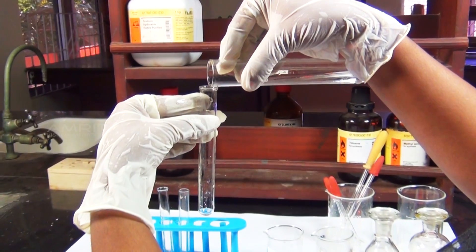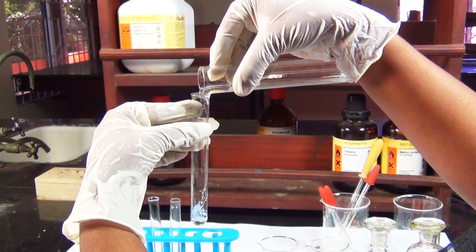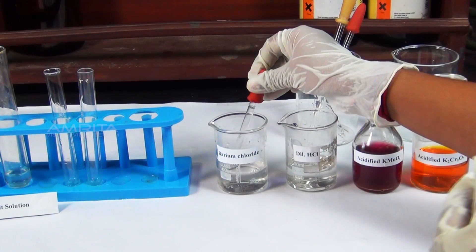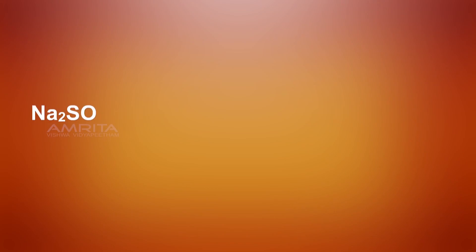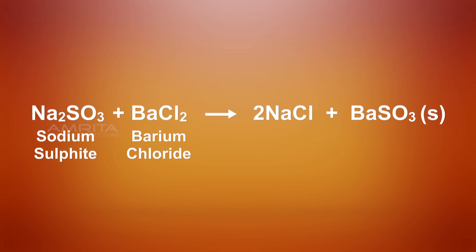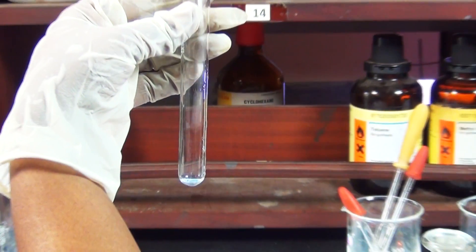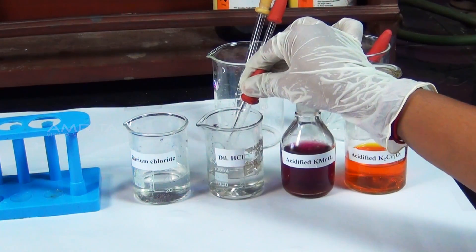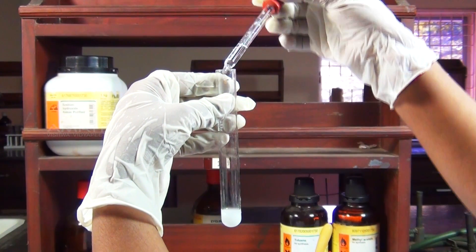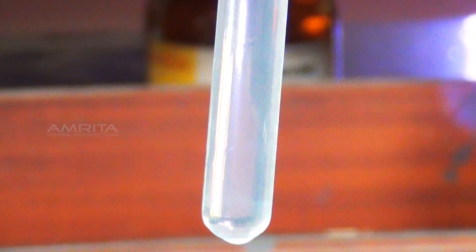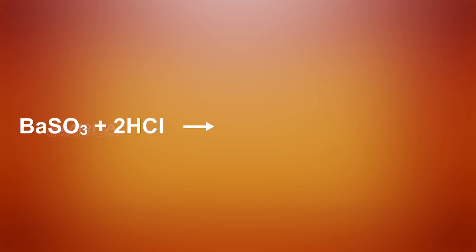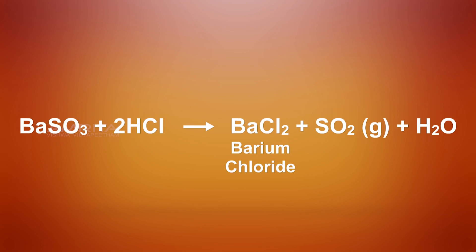Procedure: Take a small quantity of aqueous solution of the salt in a test tube. To this, add a small amount of barium chloride solution using a dropper. Sulphite reacts with barium chloride to form a white precipitate of barium sulphite. Take a portion of the precipitate in another test tube. To this, add a small amount of dilute hydrochloric acid using a dropper and shake the test tube. The precipitate of barium sulphite dissolves in dilute hydrochloric acid to form soluble barium chloride and evolves sulphur dioxide gas.